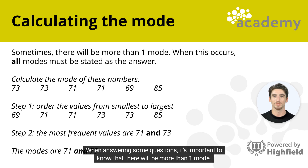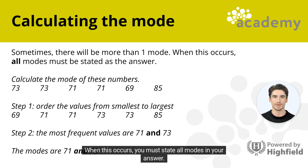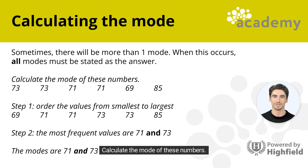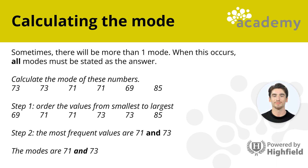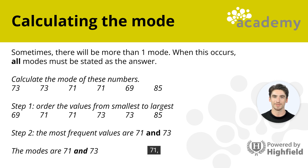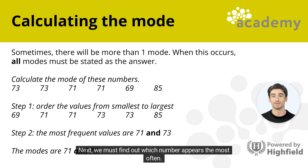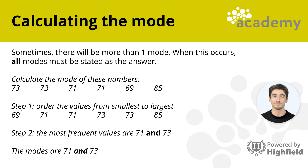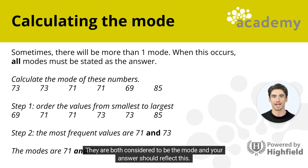When answering some questions, it's important to know that there will be more than one mode — when this occurs, you must state all modes in your answer. For example, calculate the mode of: 73, 73, 71, 71, 71, 69 and 85. Ordered from smallest to largest: 69, 71, 71, 73, 73 and 85. The most common values are 71 and 73 — they both appear twice. Therefore, the modes are 71 and 73, and your answer should reflect both.